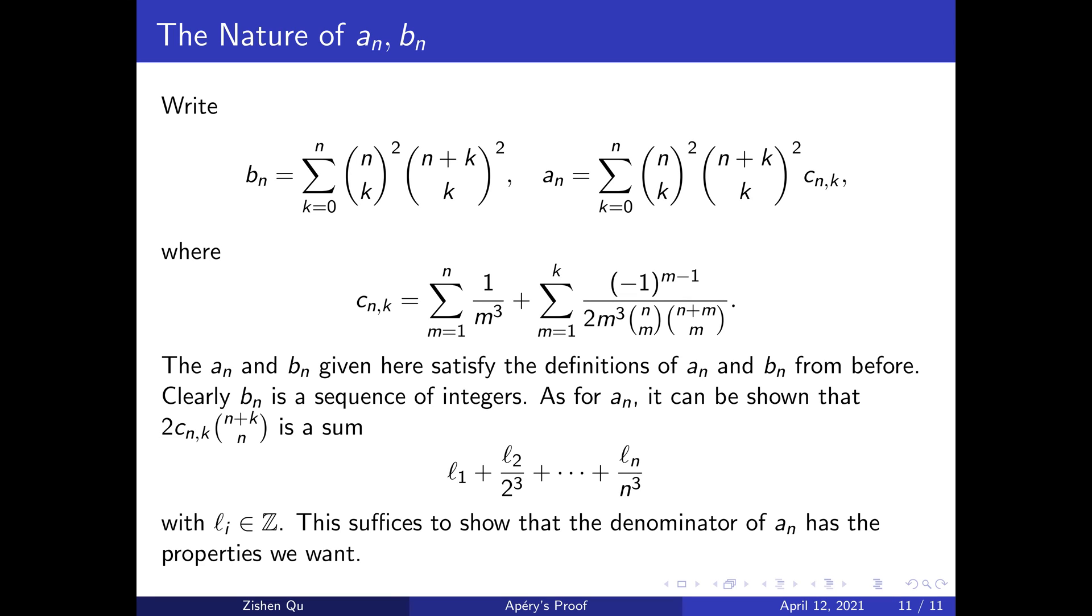We will now have a closer look at the rational sequence and consider some of the necessary assertions made earlier. The sequences a_n and b_n can be written explicitly, as can be seen on this slide. Earlier, we provided definitions in recurrence form to facilitate the main proof. One should note here that c_{n,k} converges to ζ(3) as n goes to infinity, so a_n/b_n converges to ζ(3).